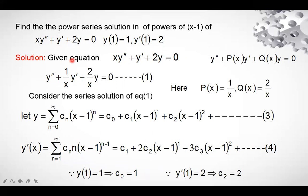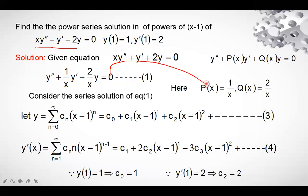First, we convert the given equation to standard form y'' + P(x)·y' + Q(x)·y = 0 by dividing throughout by x. We get y'' + (1/x)·y' + (2/x)·y = 0. Comparing with the standard form, P(x) = 1/x and Q(x) = 2/x.